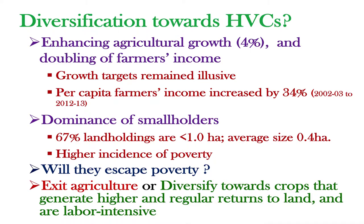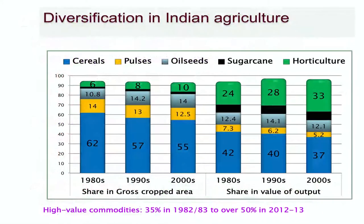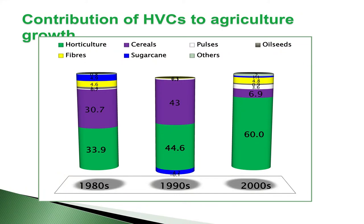Regarding profitability of high value crops, net returns from high value crops are about two to five times more than cereals—generally more than twice. There are questions about small farmer participation: land holdings are too small; diversification may adversely affect household food security; these crops are capital and information intensive and carry greater risk. However, small holders do have an advantage in horticultural crops, with an inverse relationship still persisting. Marginal farmers participate in high value agriculture, allocating about 39% of their area to high value crops.